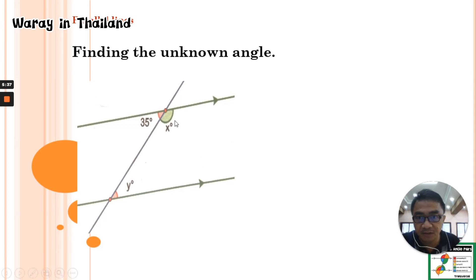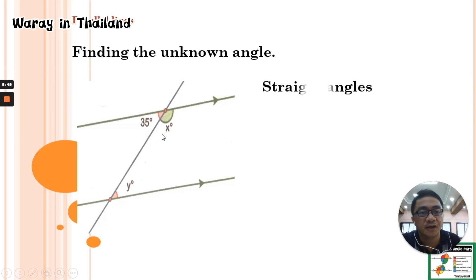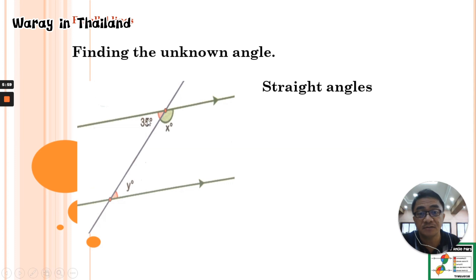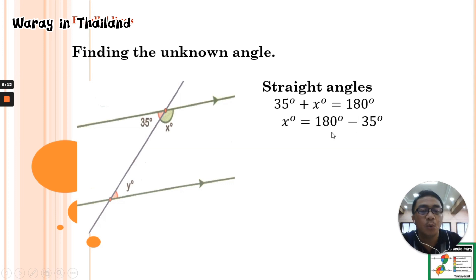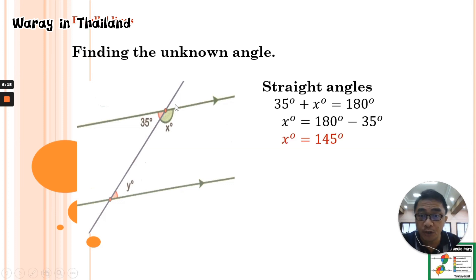Now our last example: we need to find two unknown angles, angle X and angle Y, with the given angle of 35 degrees. First, we find angle X using straight angles, or supplementary angles — the sum is 180 degrees. So 35 plus angle X equals 180 degrees. Transposing, angle X equals 180 minus 35, which is 145 degrees.